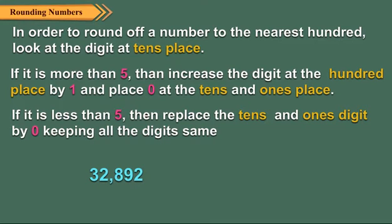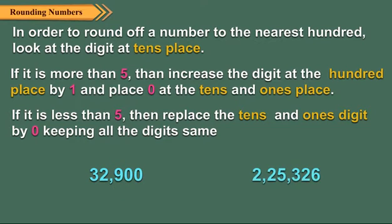Let us see examples. Here, nine is greater than five, so increase the hundreds digit by one and place zero at the tens and ones place. Here, two is less than five, so replace the ones and tens digit by zero, keeping all the digits the same.